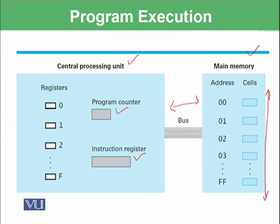For example, at address 0 there is an instruction in binary, at address 01 there is another instruction in binary, and so on. So in the start, in the program counter, the address of the first location where the instruction is to be fetched is saved.